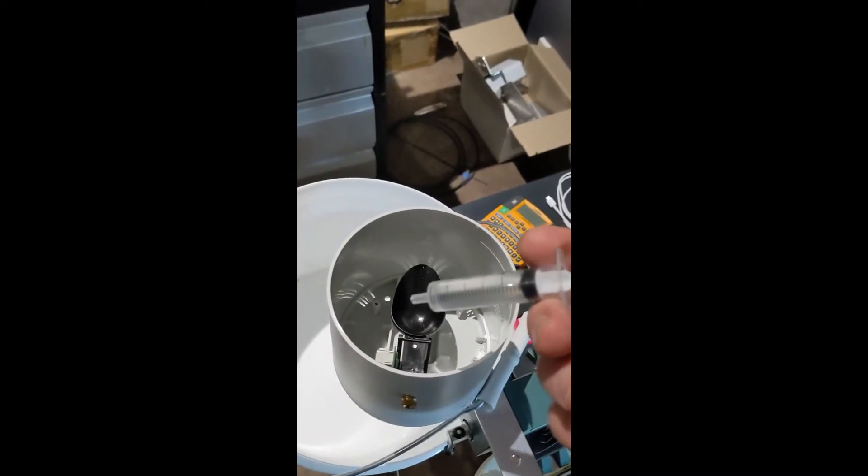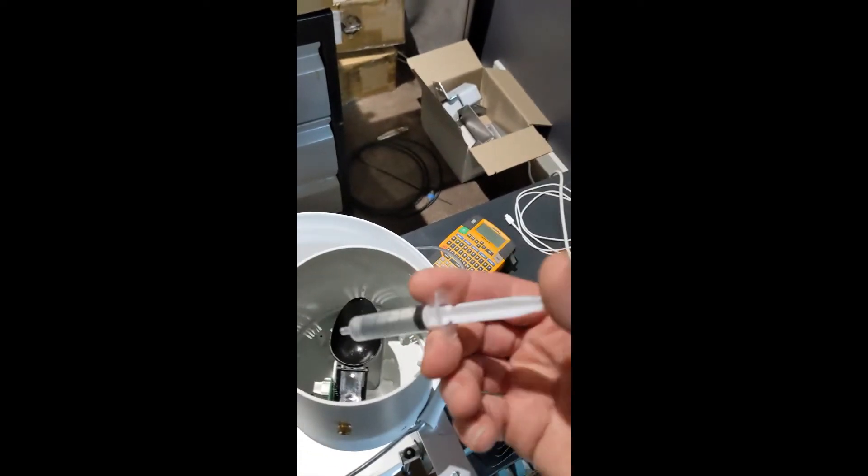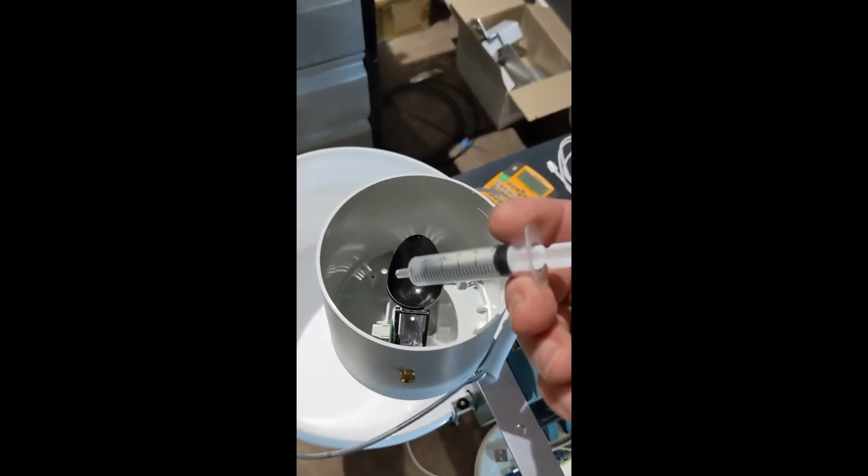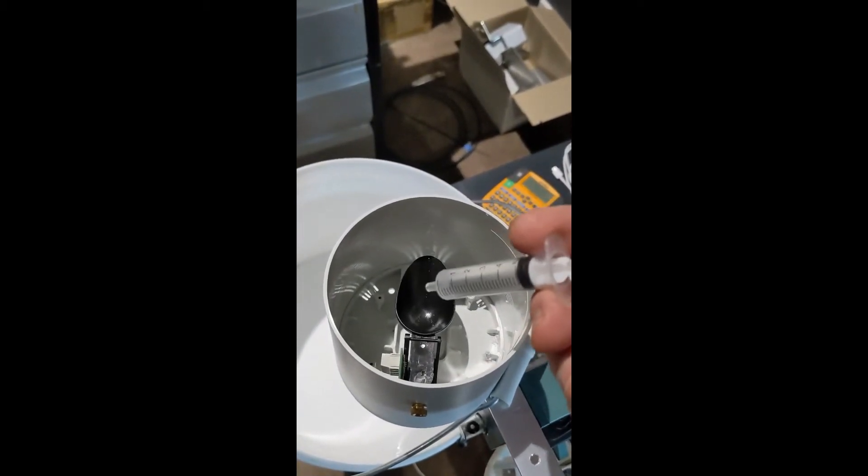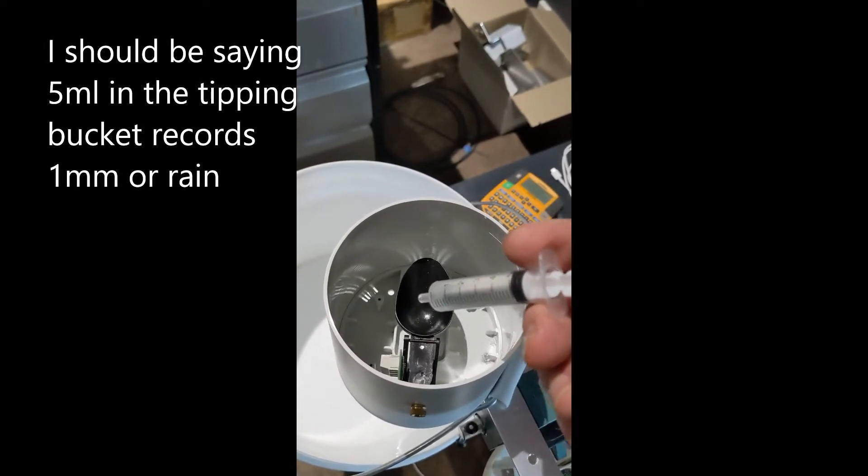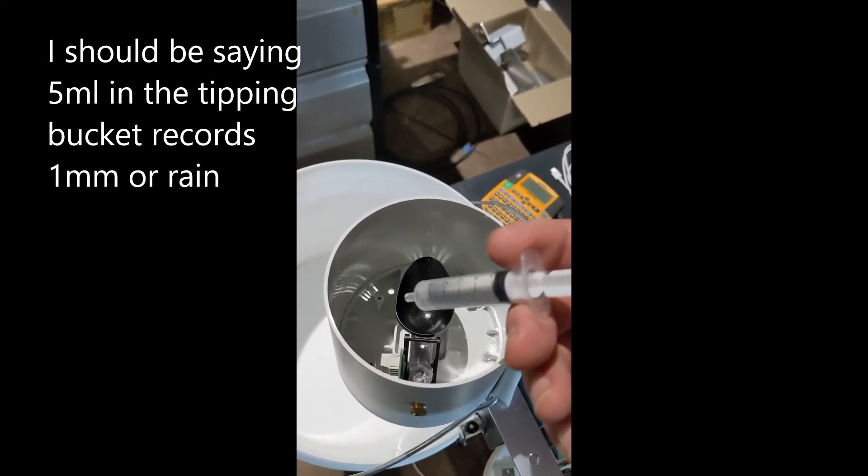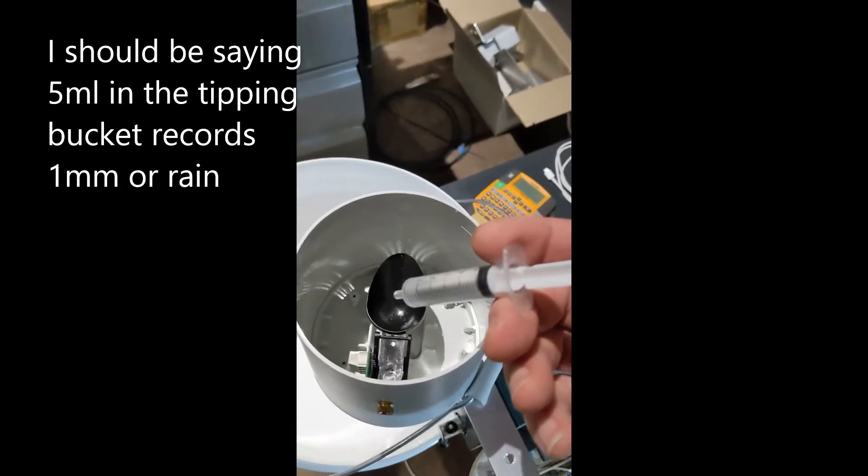To calibrate the rain gauge, you want to get a five millimeter syringe from the chemist and the tipping bucket. In here, it should take five millimeters to tip, which measures as one millimeter of rain.